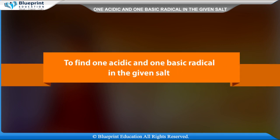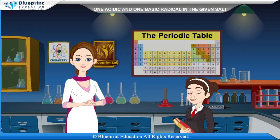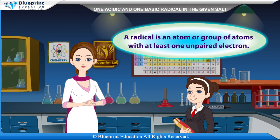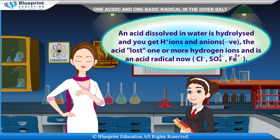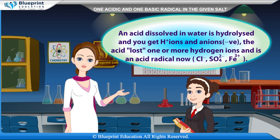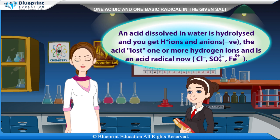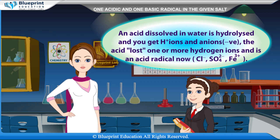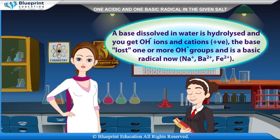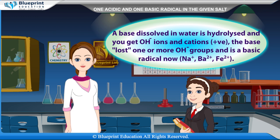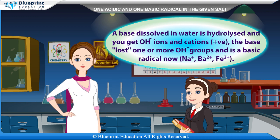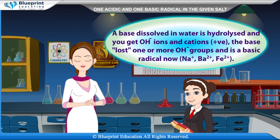To find one acidic and one basic radical in the given salt: a radical is an atom or group of atoms with at least one unpaired electron. An acid dissolved in water is hydrolyzed and you get H+ ions and anions (negative). The acid lost one or more hydrogen ions and is an acid radical — for example, Cl-, SO4 2-, Fe3+. A base dissolved in water is hydrolyzed and you get OH- ions and cations. The base lost one or more OH- groups and is a basic radical — for example, Na+, Ba2+, Fe2+.